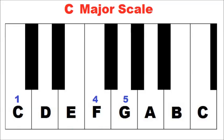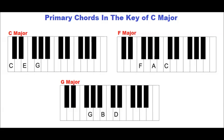Therefore, the primary chords in the key of C major are C major, F major, and G major.